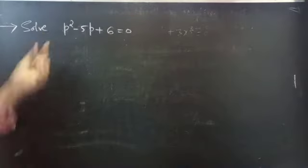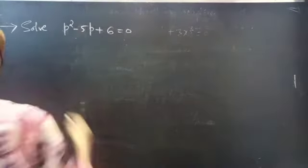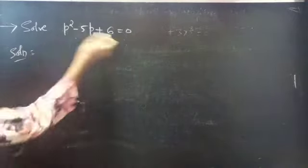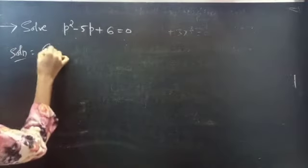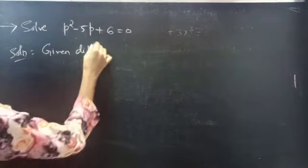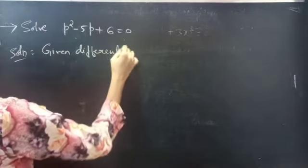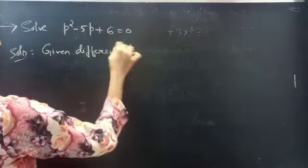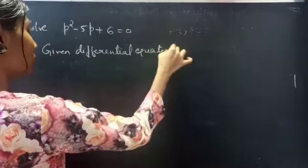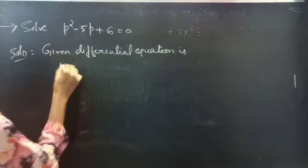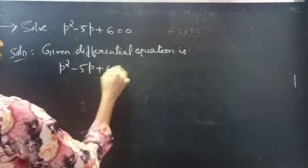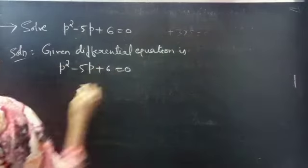Problem. Solve P squared minus 5P plus 6 equals to 0. The given differential equation is P squared minus 5P plus 6 equals to 0.